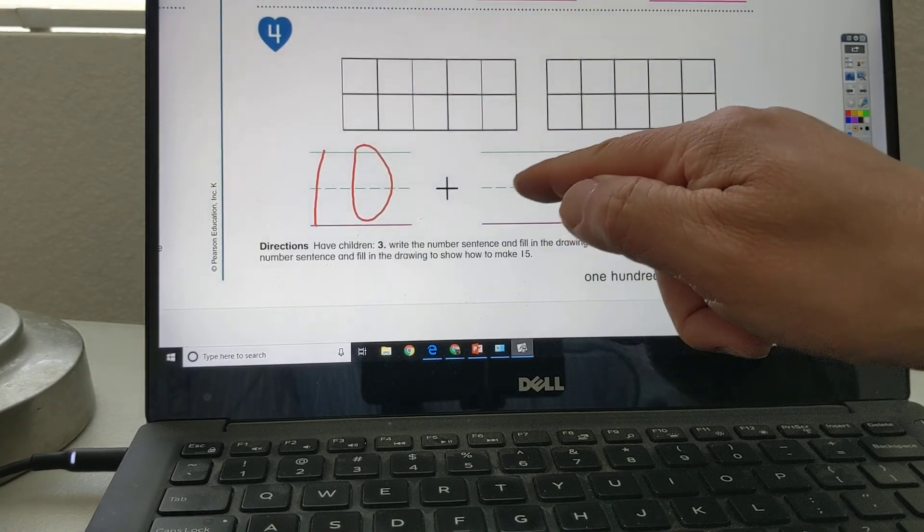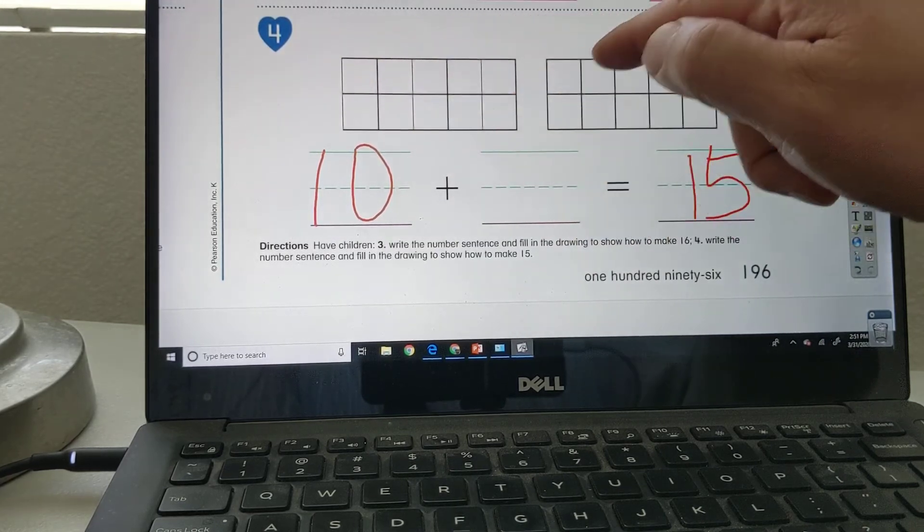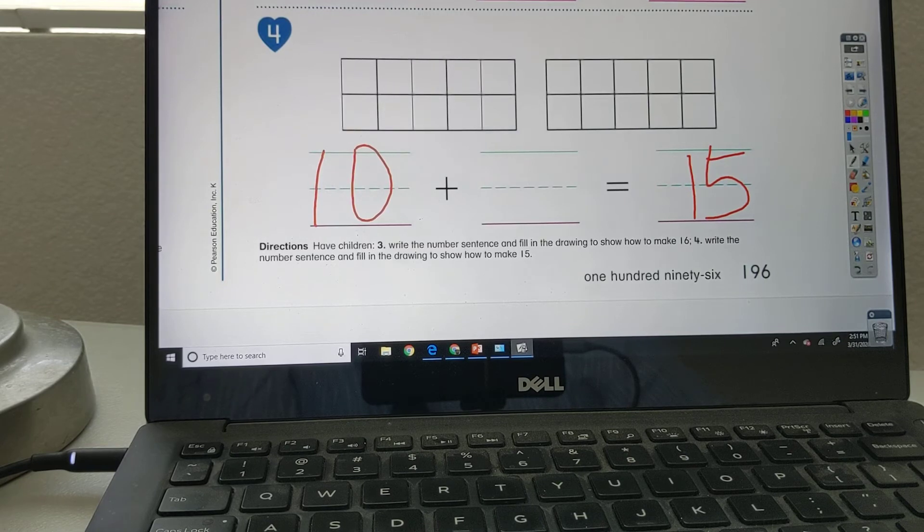You should figure that out. And then 10 plus how many to make 15. You should do the best you can. If you have a tough time, you can ask your parents. Best wishes, boys and girls.